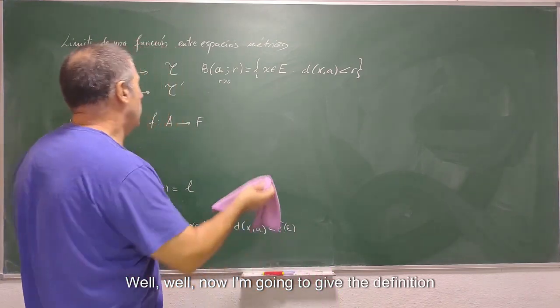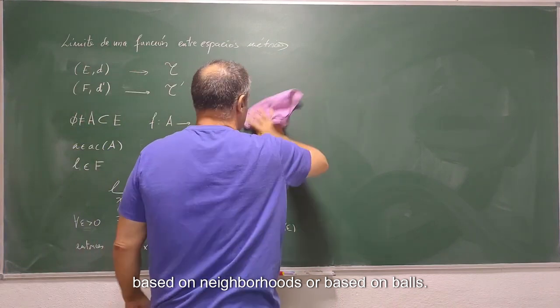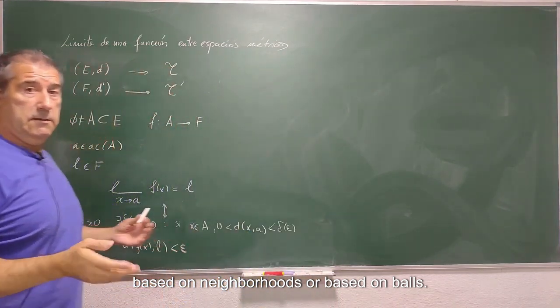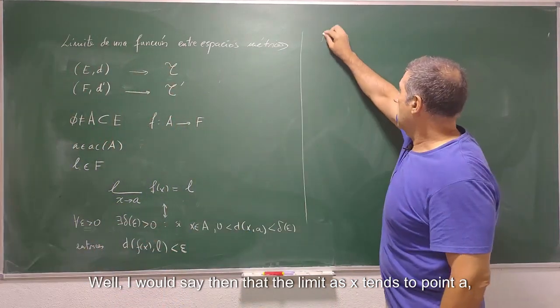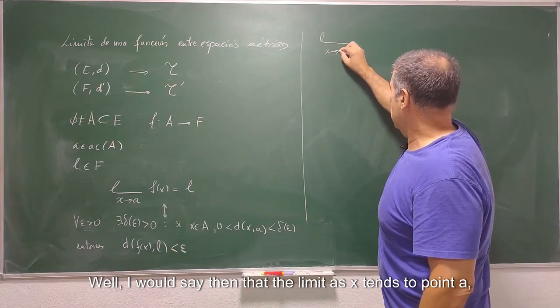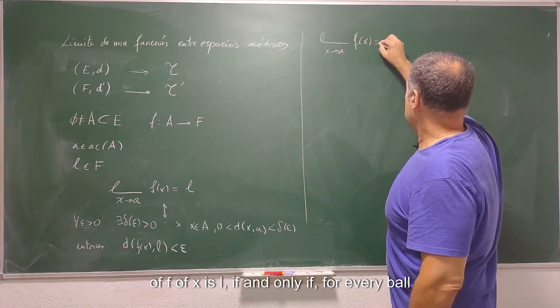In fact, as I have already mentioned, they are the basic concept to then define all the open ones. Well, now I'm going to give the definition based on neighborhoods or based on balls. I would say then that the limit as x tends to point a of f of x is L if and only if for every ball.